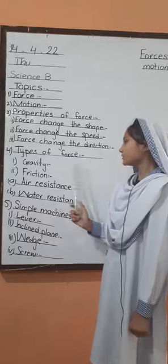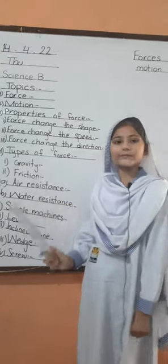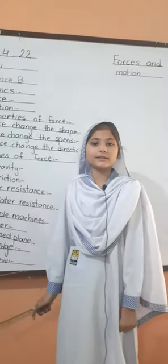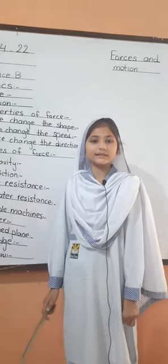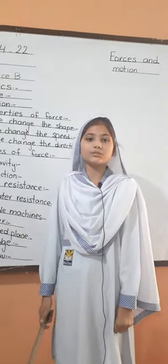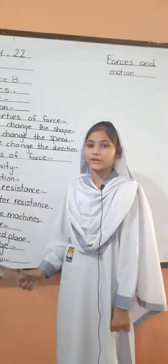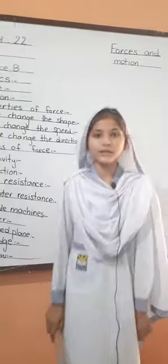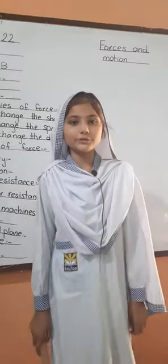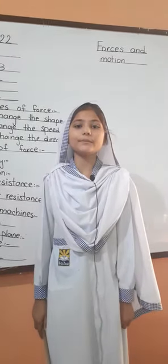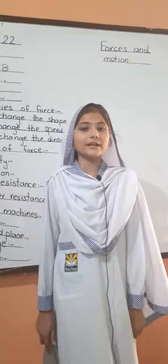Types of force. Number 1: Gravity. Gravity is a force that pulls a body towards the center of the earth. If we jump into the air, gravity pulls us back down.